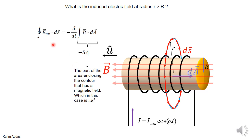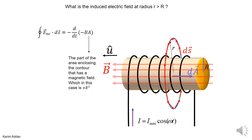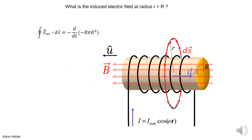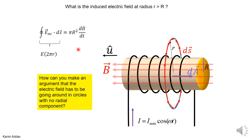Substituting into the Faraday-Maxwell equation, the magnetic flux is −BA = −B·πR². The two minus signs cancel, so on the right-hand side we get πR²·(dB/dt). The left-hand side is ∫E·ds. Since the electric field goes around in circles parallel to ds, the angle between them is zero, so E·ds = E·ds. By symmetry, E is constant everywhere on the circle, so this becomes E·2πr.